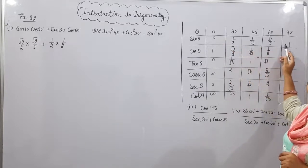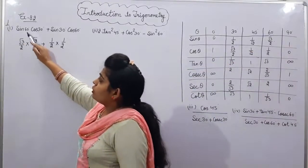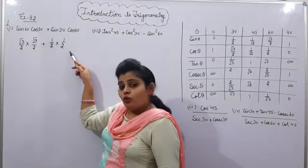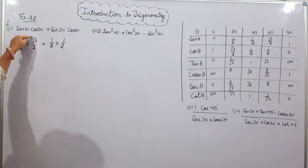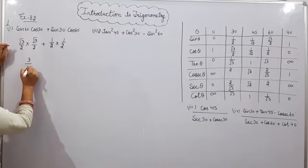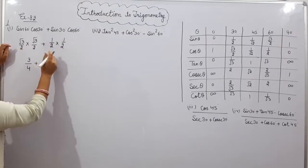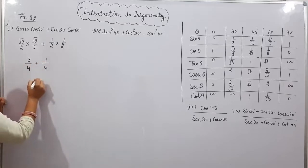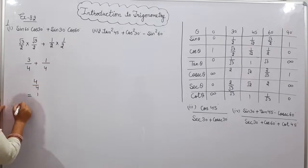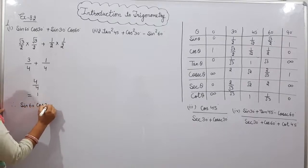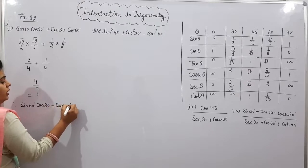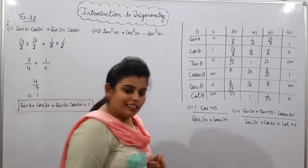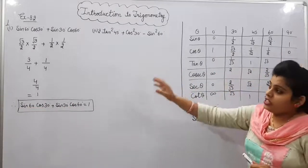Sin 60 is √3/2, and since sin and cos are complementary, cos 30 has the same value: √3/2. Plus sin 30 is 1/2 and cos 60 is 1/2. Solving: √3 × √3 = 3, so 3/4, plus 1 × 1 = 1/4. Taking LCM: 3/4 + 1/4 = 4/4 = 1. So sin 60° · cos 30° + sin 30° · cos 60° = 1. This is our answer for Part 1.